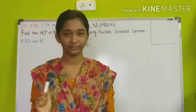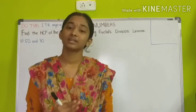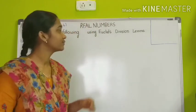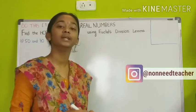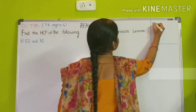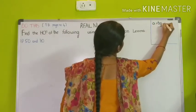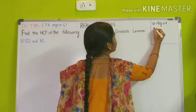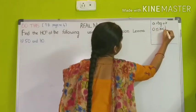HCF means Highest Common Factor. We also need to revise the conditions and equations we learned about Euclid's division lemma in the previous 5 videos. The first and most important is the equation: A is equal to B into Q plus R. And the condition for the remainder is that 0 is less than or equal to R, which is less than B.